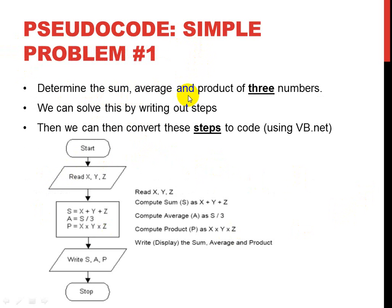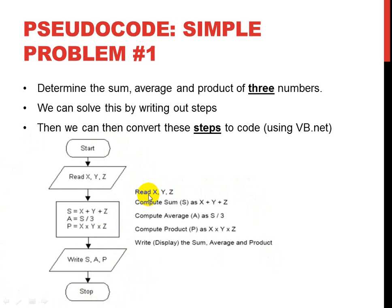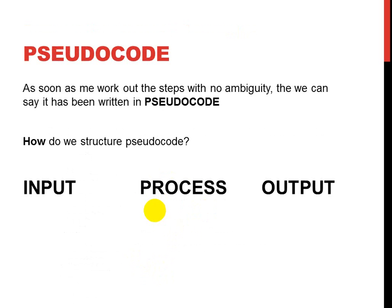Simple problem number one: determine the sum, average, and product of three numbers. We can solve this by writing up the steps or a flowchart, then convert to VB.NET code. In pseudocode: START, READ is input, S = X + Y + Z is process, and WRITE is output, then STOP. So READ is input of X, Y, and Z; COMPUTE is the same as process — the sum, average, and product; and WRITE is our output.